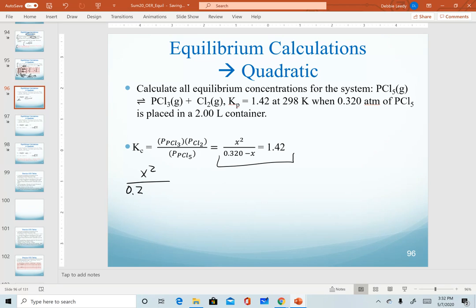So remember to set up our equation to use the quadratic, we want to set everything equal to zero. So that means I need to multiply both sides by my denominator. And I'm going to distribute the 1.42 by both substances or both values. So 1.42 times 0.32 is 0.04544 minus 1.42x.